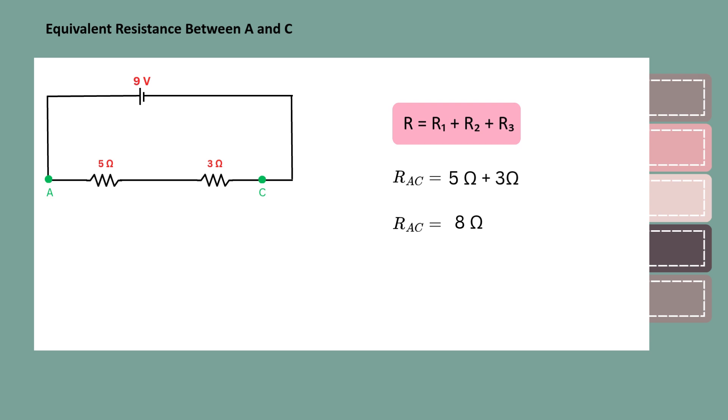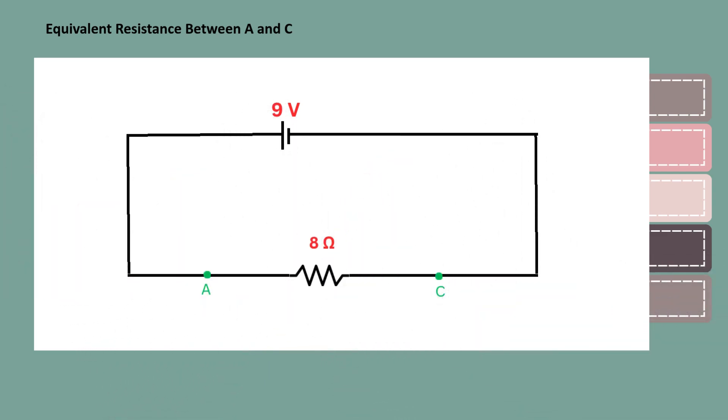That means the total resistance between point A and point C is 8 ohms. We can now replace the resistors between points A and C with a single 8 ohm resistor.